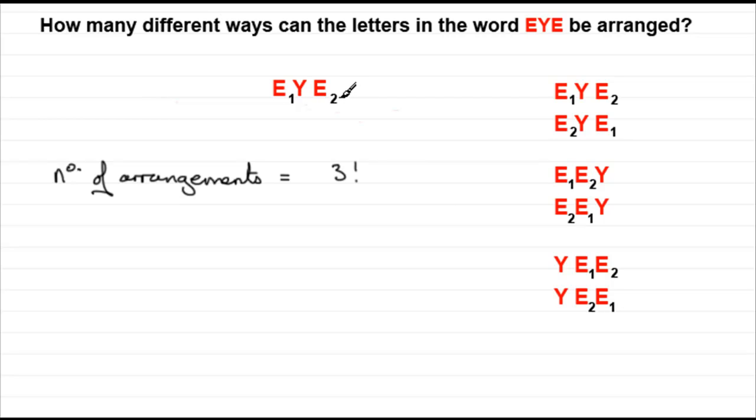So if we were to take the subscripts away, we would get these six here. But can you see that this block here looks exactly the same, these two exactly the same, and with these two, these are exactly the same. So in fact, I haven't really got six different arrangements.